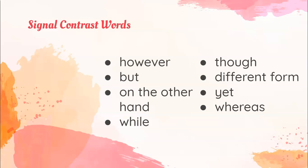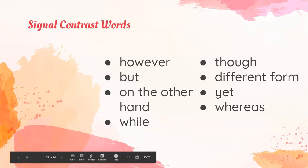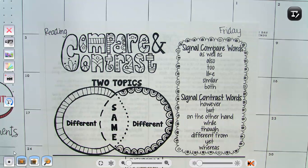With compare and contrast, you may have seen a Venn diagram. We're going to look at an example of a compare and contrast passage. You'll need the handout that says 'Compare and Contrast.' We're going to read one example together and look for some of those signal words, and then you'll have a passage to read on your own. Compare and contrast means we take two topics and find how they are similar and how they are different.